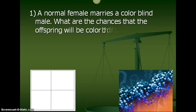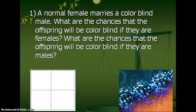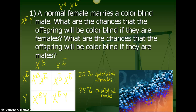Problem one: a normal female marries a color blind male. What are the chances the offspring will be color blind if they are female, and what are the chances if they are male? We're going to say she is heterozygous for the trait — X big B, X little b — crossed with X little b, Y. Go ahead and pause to check your answers. The results: 25% of offspring are color blind females and 25% are color blind males.